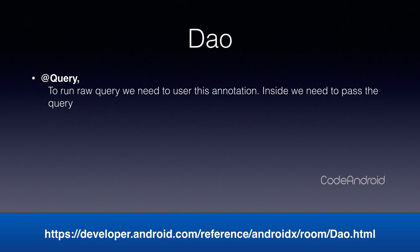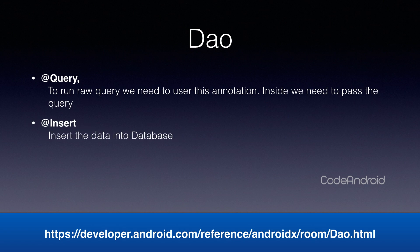To run a raw query, we need to annotate the function with @Query and pass the database query inside it. To insert data into the database, we need to take the entity object as a parameter and annotate the function with @Insert, so that Room Database handles the insertion.